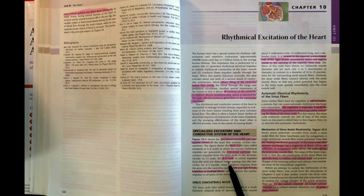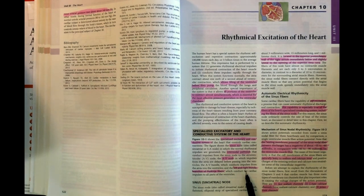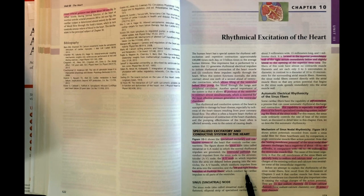We then have the AV node, or atrioventricular node, located at the junction between the atrium and ventricles. Its function is to delay that signal from being sent to the ventricles to allow them to fill with blood. Then we have the bundle branches of the Purkinje fibers, which act as highways for the ventricles to send signals around the entire ventricular muscle so they can all contract as one.